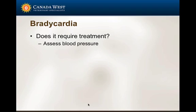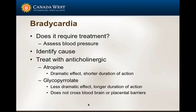The first question is always: does it require treatment? If a dog has a heart rate of 60 but the blood pressure is great, I don't treat it — I just leave it and ride it out. I'll usually tell the tech to have a dose ready just in case. First, identify the cause and address it, then consider treating with an anticholinergic.